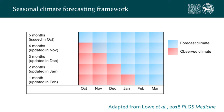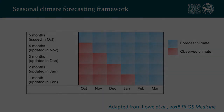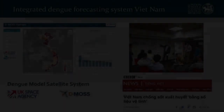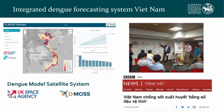As we approach the target month, we can replace seasonal climate forecast information with observations of the climate to improve our forecast each month as we approach the month of interest, and also extend the lead time forward each month. Thanks to a UK Space Agency funded project, we've been working to develop an operational dengue early warning system for Vietnam.